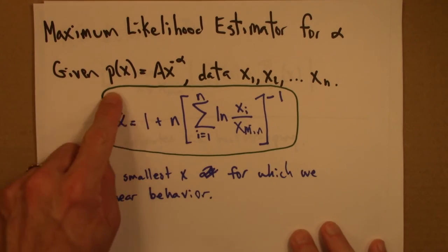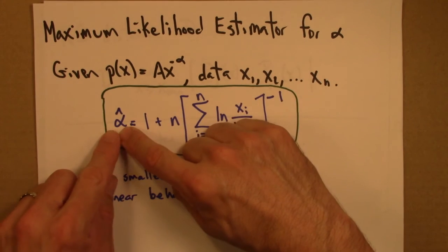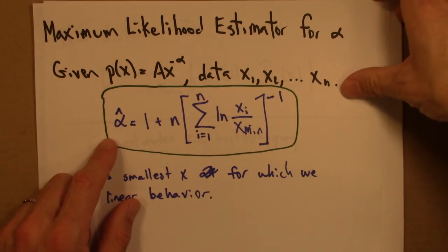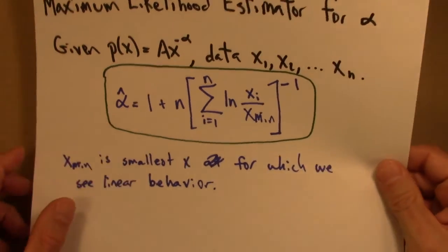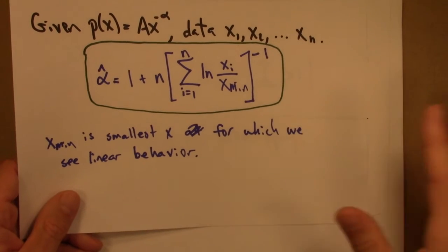Here, there's theory that can give you error estimates. One can show that this estimator is normally distributed. So you can use that fact to figure out your uncertainties for this. Again, this is all explained in much more detail in the Clausset, Newman and Shalizi paper.